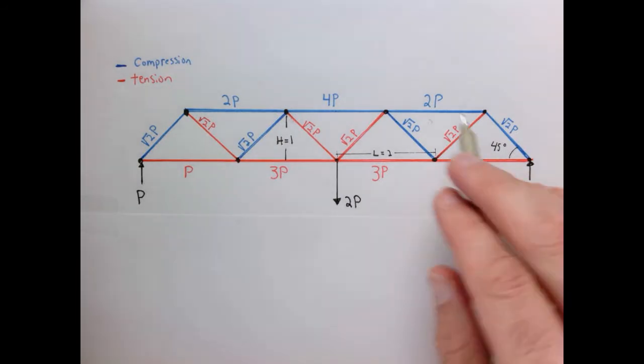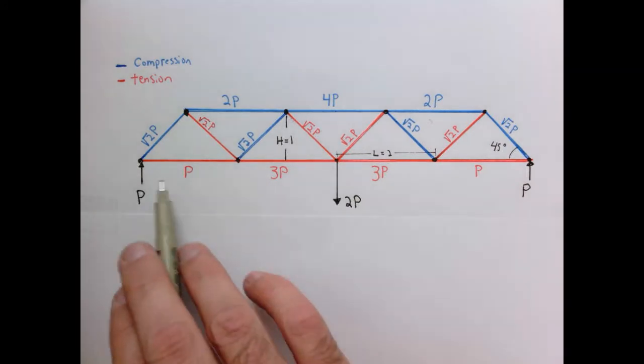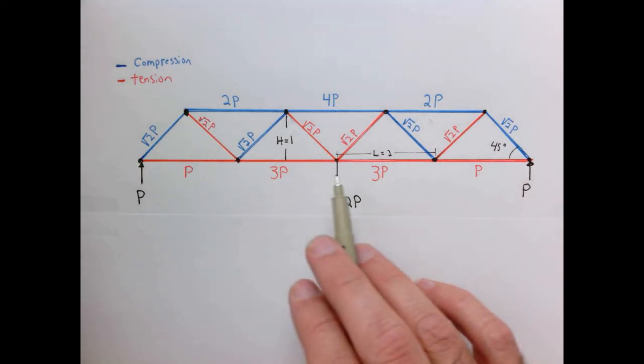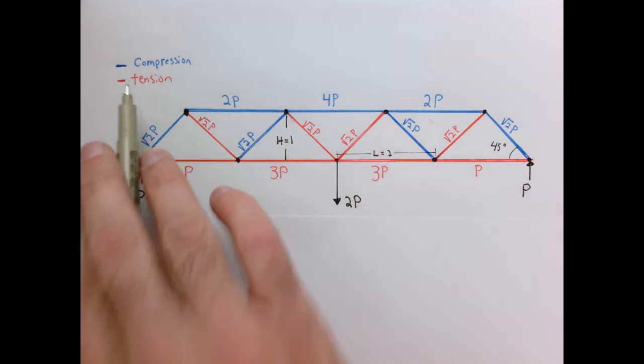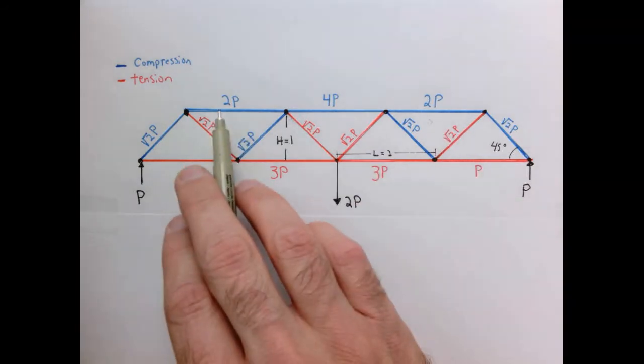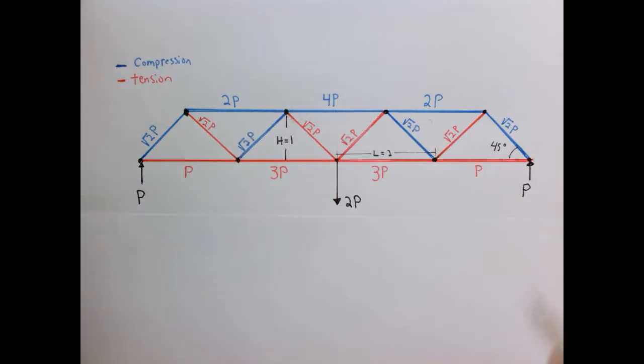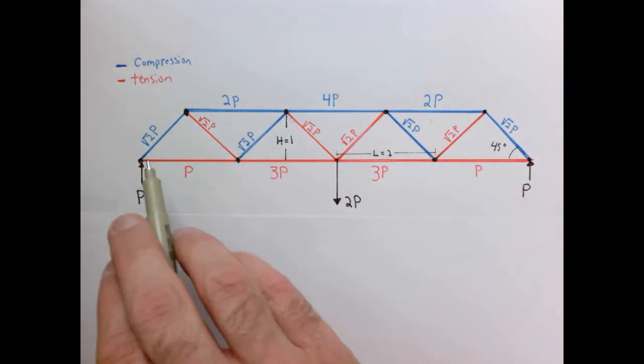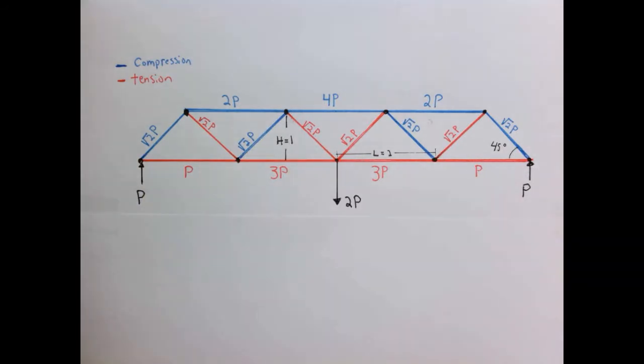You can go back and look at previous videos to understand the forces, but along the bottom we have the members all in tension, so they're coded red, and they are P on the outside, 3P in the middle. The upper horizontal ones are in compression, and they're 2P and 4P respectively. All our diagonals are a magnitude of square root of 2P all the way across, but they alternate tension and compression as such.